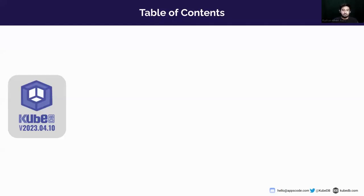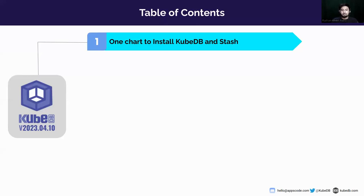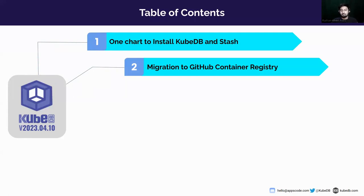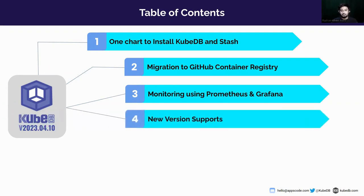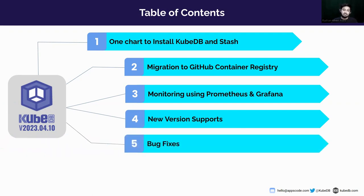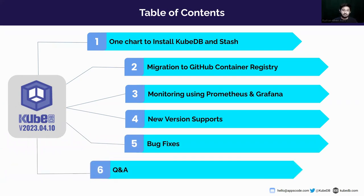Let's see what we are offering in this release at a glance. We are introducing the KUBEDB one chart to install KUBEDB and Stash. We're also going to talk about our migration to GitHub Container Registry, extending support for monitoring using Prometheus and Grafana dashboards, new version supports for several databases, bug fixes and improvements, and finally a Q&A session.